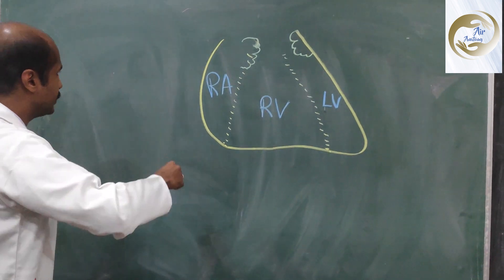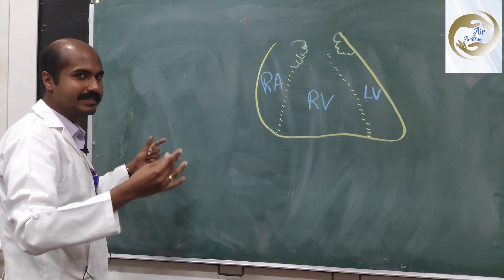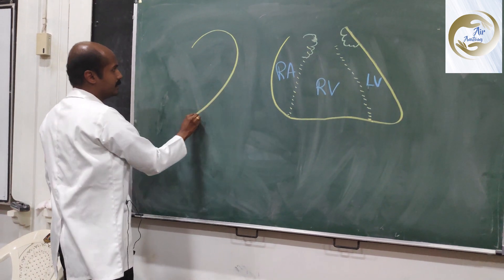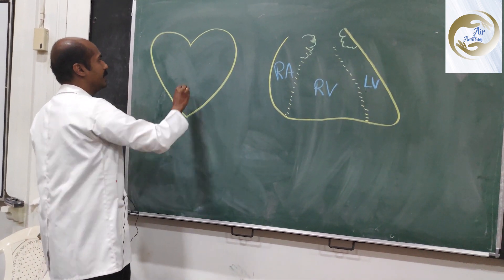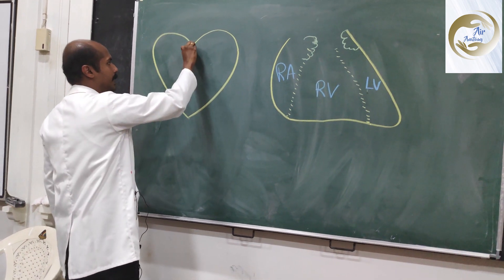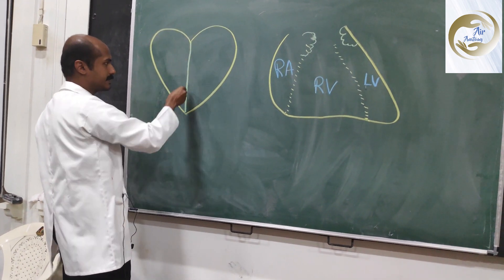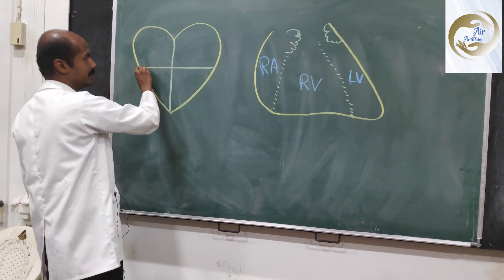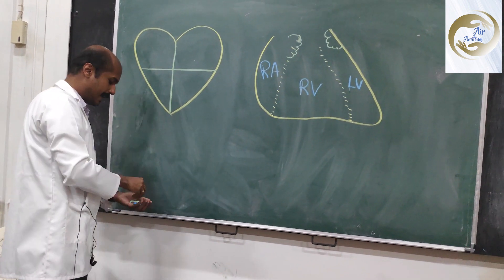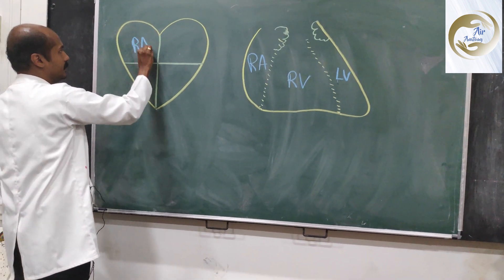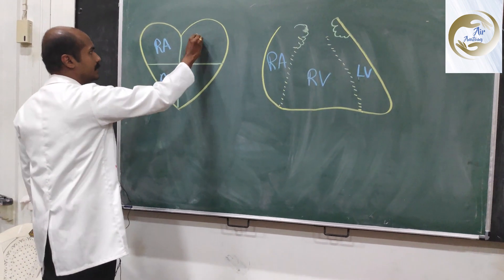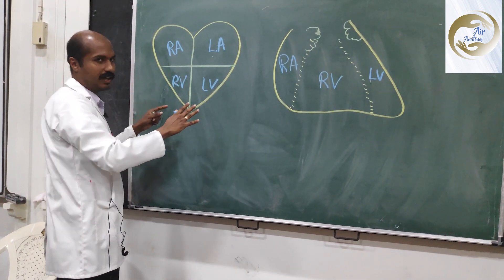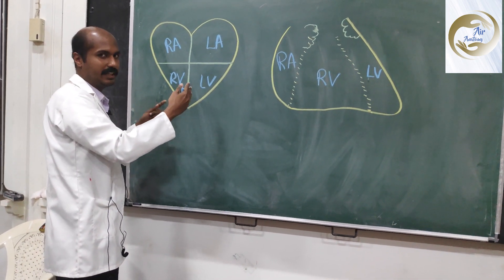I am drawing a valentine heart — a much easier disposition of the chambers — to help you correlate how these chambers are located in anatomy. Imagine this is the septum separating the right side of the heart from the left side, and this is the partition separating the atrium from the ventricle. In that case, this will be the right atrium, this will be the right ventricle, this will be the left atrium, and this will be the left ventricle. This is a pretty easy disposition of the heart, usually the first diagram we learn in lower classes.